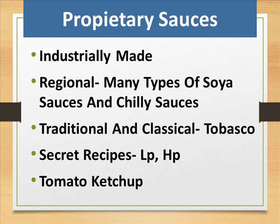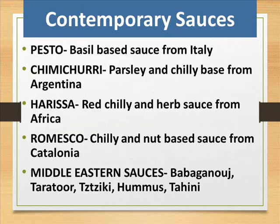Proprietary sauces are industrially made. Regional types include many varieties of soya sauces and chili sauces. Traditional and classical proprietary sauces include Tabasco, HP sauce, and tomato ketchup — often with secret recipes. Contemporary sauces include: Pesto — basil-based sauce from Italy; Chimichurri — parsley and chili base from Argentina; Harissa — red chili and herb sauce from Africa; Romesco — chili and nut paste sauce from Catalonia; Middle Eastern sauces such as Babaganoush, Tarator, Tzatziki, Hummus and Tahini.